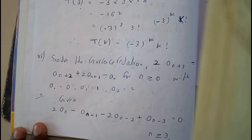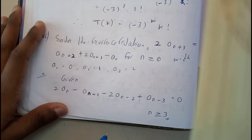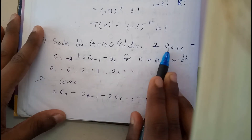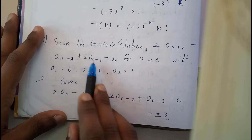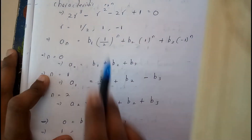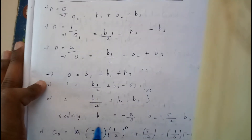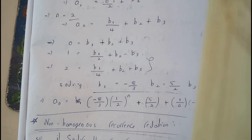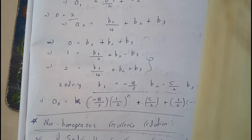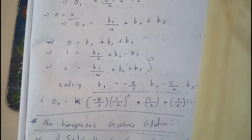Let's go through one last problem in this part. The question is: 2·a(n+3) = a(n+2) + a(n+1) − a(n). This is similar to the first problem in this tutorial — we get three values. Write the equation, find the characteristic equation, find the homogeneous solution, substitute n = 0, 1, 3 to get b1, b2, b3, and substitute back. In the next tutorial, we will be learning about non-homogeneous equations — don't miss it. Thank you for watching.